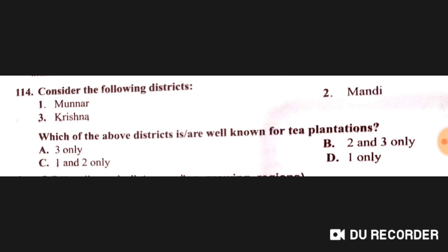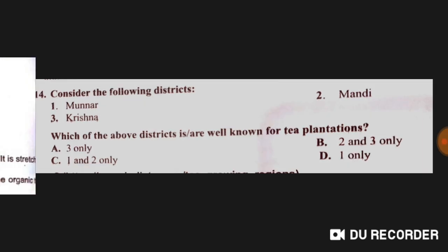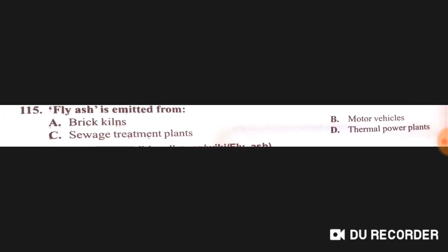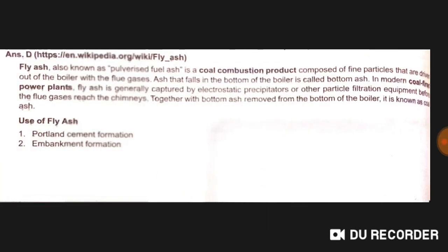Among the districts well known for tea plantation, Munnar and Mundu are correct — first and second options, answer C. Fly ash is emitted from thermal power plants.